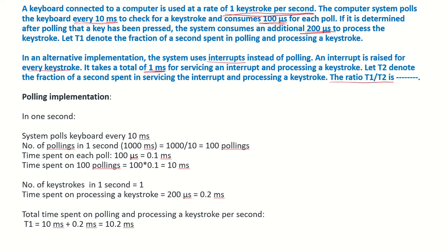So the ratio T1 to T2 is what? There are two ways in which the system is checking whether a keystroke has happened or not. In the first, there is polling happening. So let us compute T1, which is the fraction of a second spent in polling and processing the keystroke.